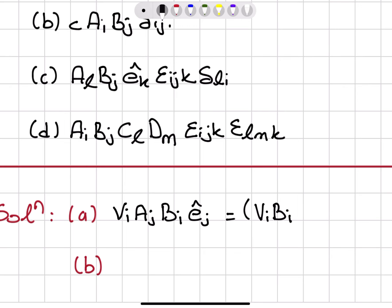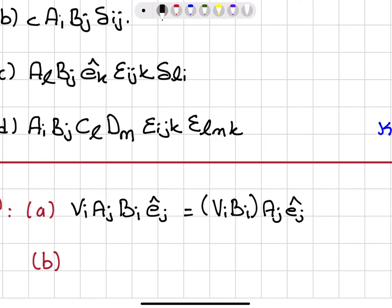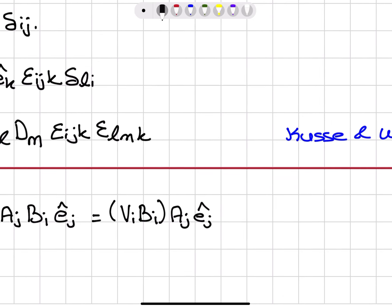Vector and Matrix Algebra, 7th exercise: convert the following Cartesian subscript summation expressions into vector notation. Part A: V_i A_j B_i Ê_j. So let's work on this.